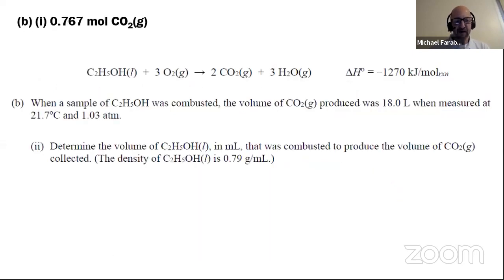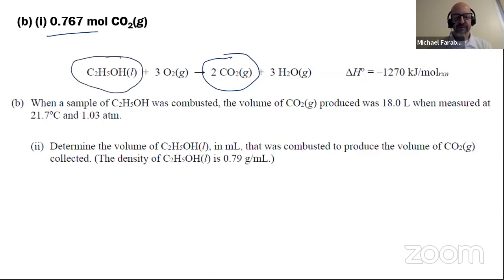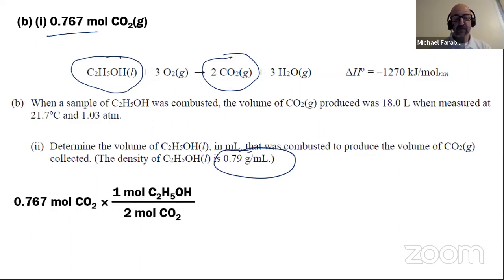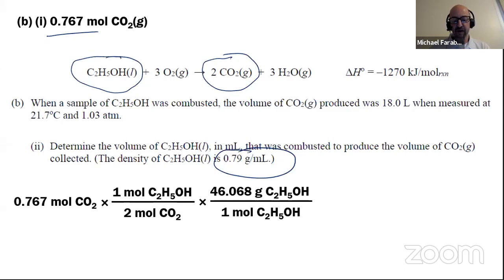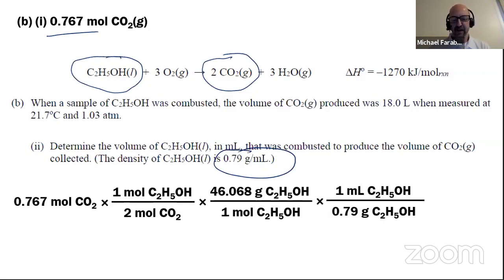Roman numeral two of part B: determine the volume of ethanol in milliliters that was combusted. We have to convert from moles of CO2 into moles of ethanol using the balanced chemical equation. Then we can use the periodic table to go from moles of ethanol to grams. Then we can go from grams to milliliters using density. We should have approximately 46 grams per mole — add up the atomic masses of two carbons, six hydrogens, and one oxygen. Then we have 0.79 grams on the bottom and one milliliter on the top to convert grams into milliliters, giving us around 22 milliliters.